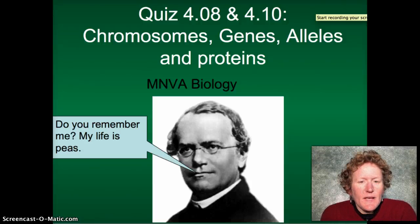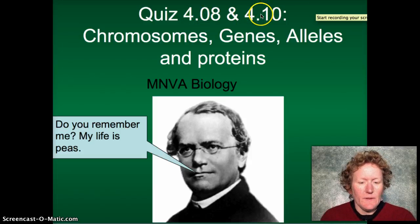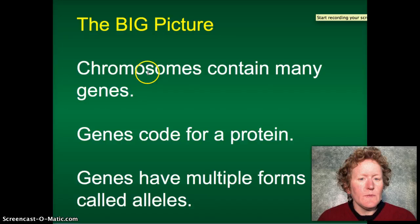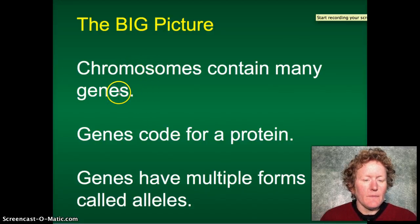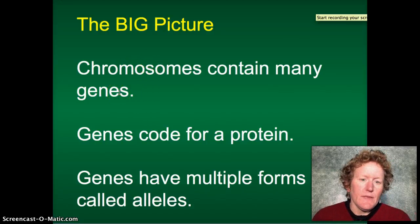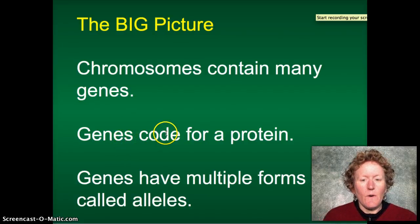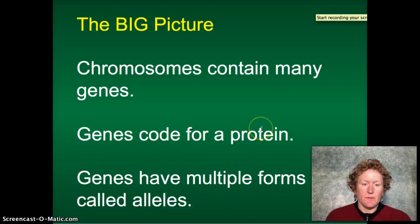Hello, this is Miss R and this is MNBA Biology. We're reviewing for quiz 4.08 and 4.10. The big idea here is that chromosomes contain many genes. A chromosome is made of DNA, and on that chromosome are many genes — between 3,000 and 10,000. Genes code for proteins, so each gene on one of those chromosomes codes for a protein.